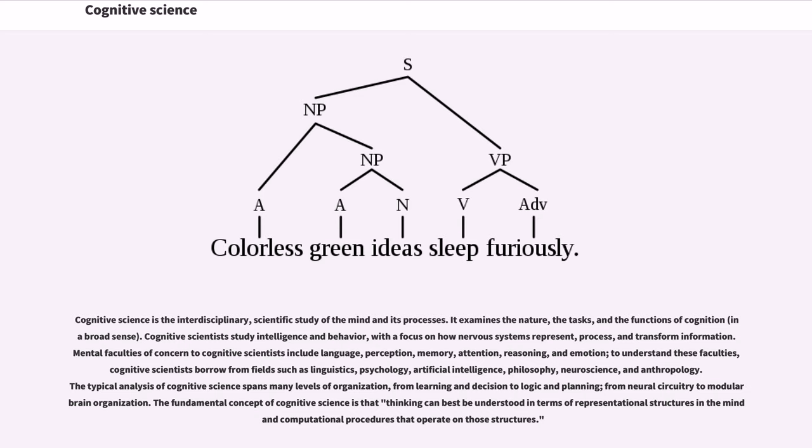Mental faculties of concern to cognitive scientists include language, perception, memory, attention, reasoning, and emotion. To understand these faculties, cognitive scientists borrow from fields such as linguistics, psychology, artificial intelligence, philosophy, neuroscience, and anthropology.